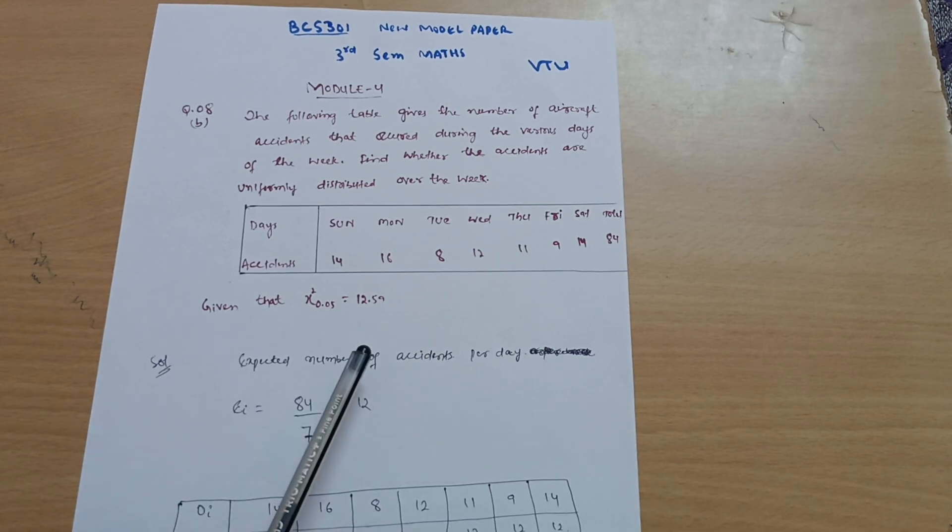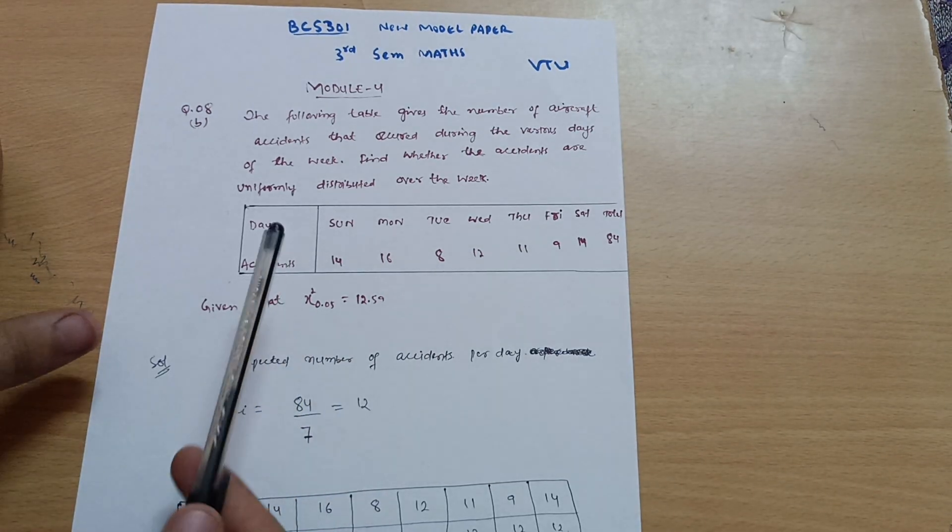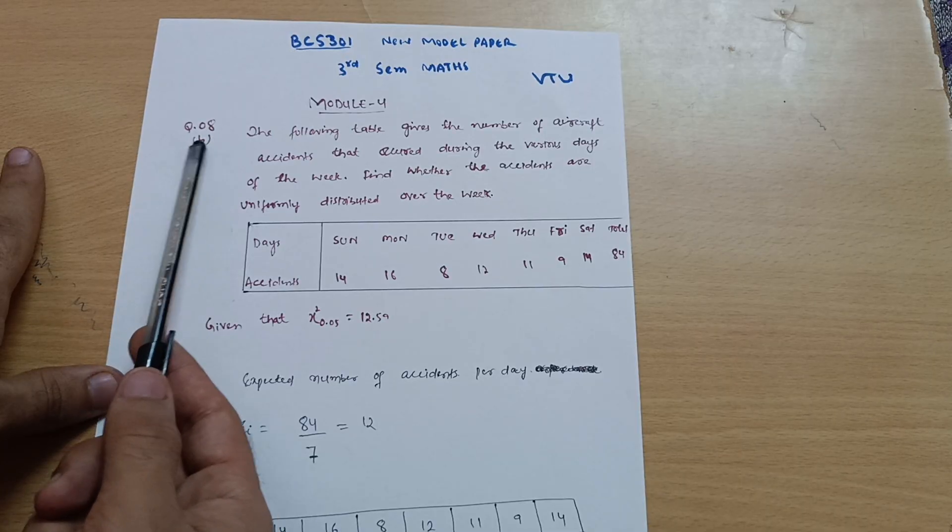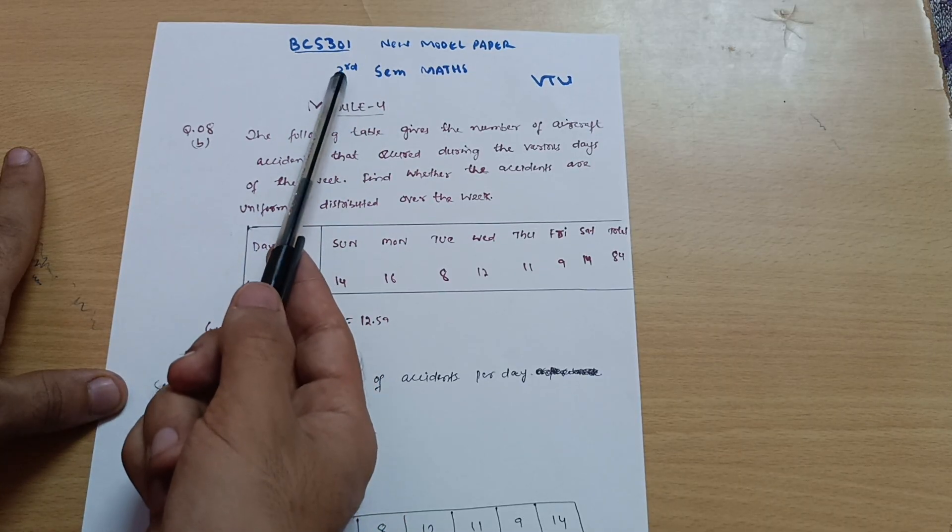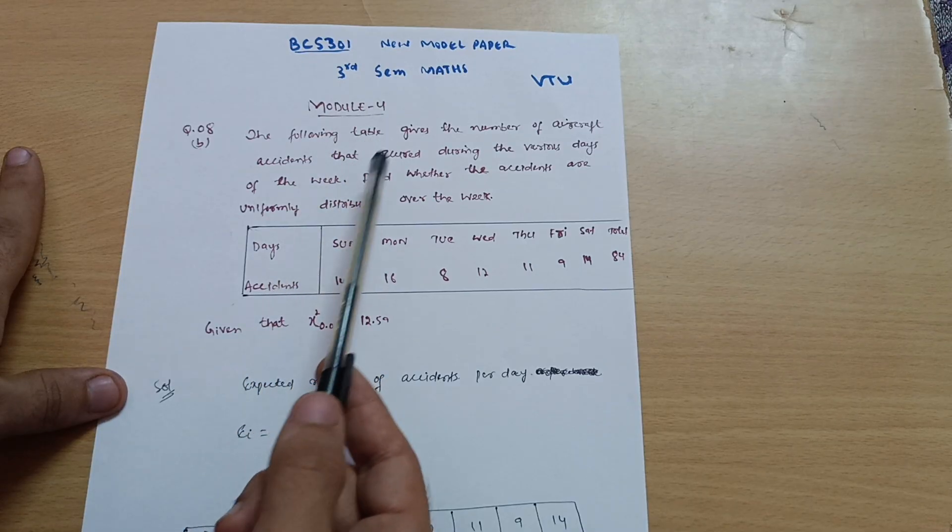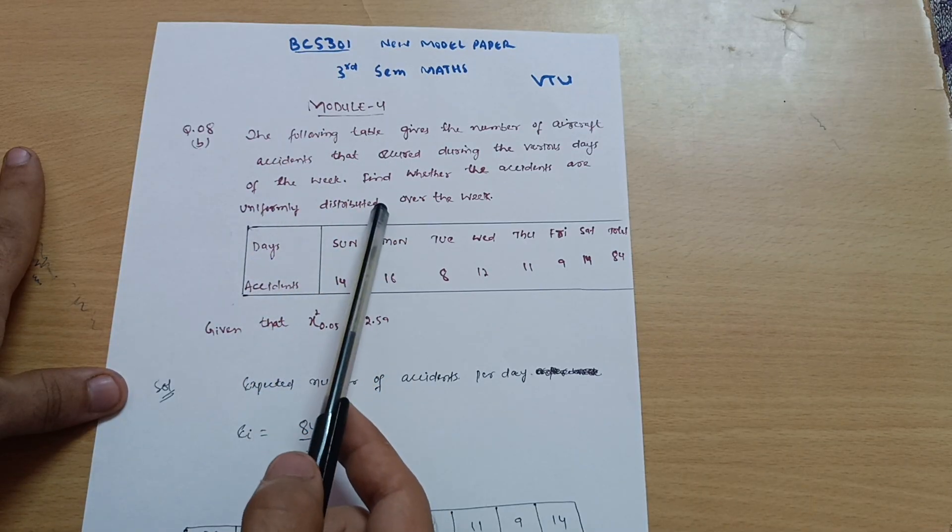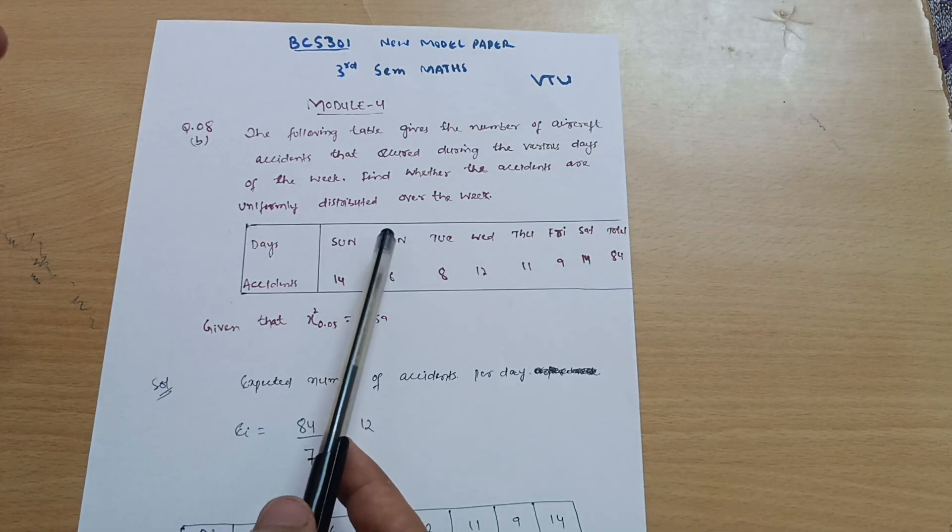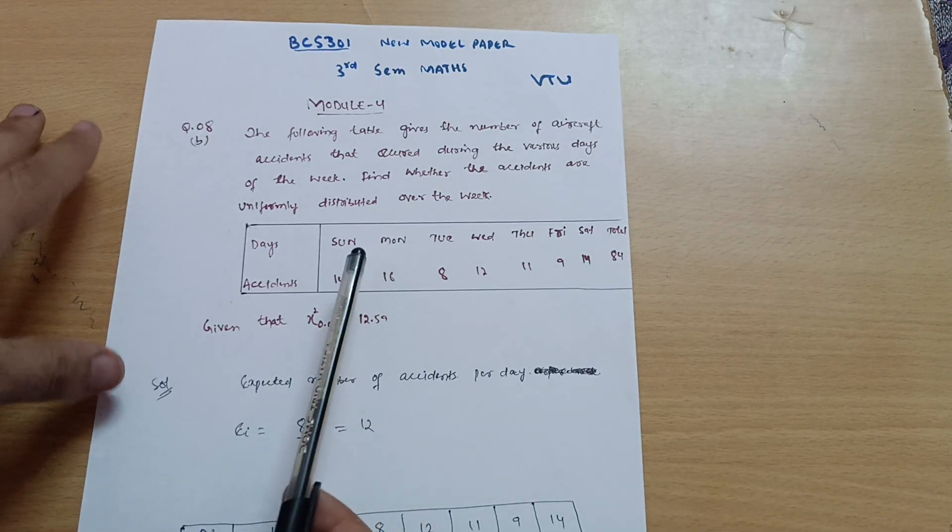Dear friends, welcome back again. We are discussing the model question paper. In this video I will discuss question number 8b from the model paper for CSC stream students, mathematics subject, third sem. This is the problem on chi-square distribution. We have also solved problems on this particular concept in detail.